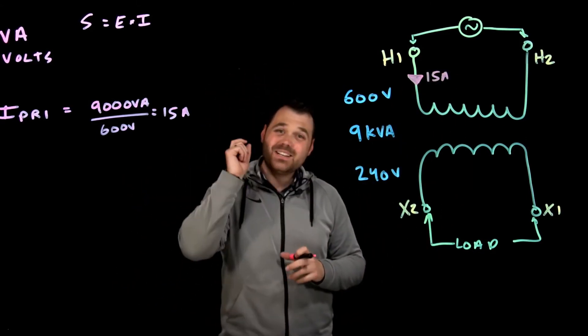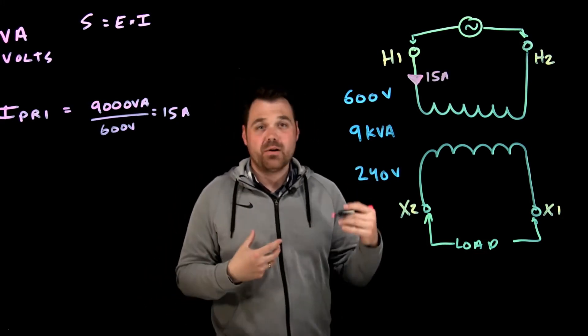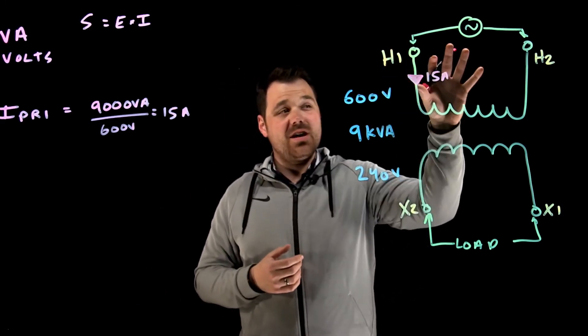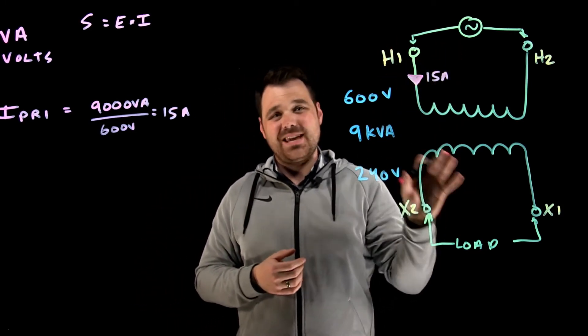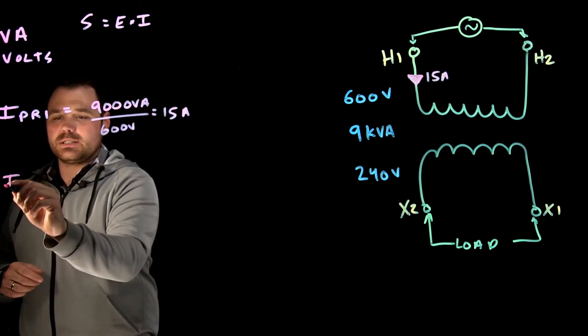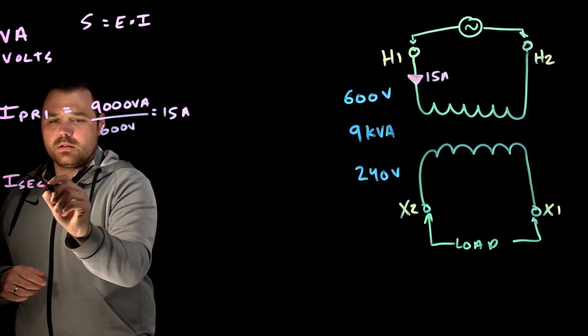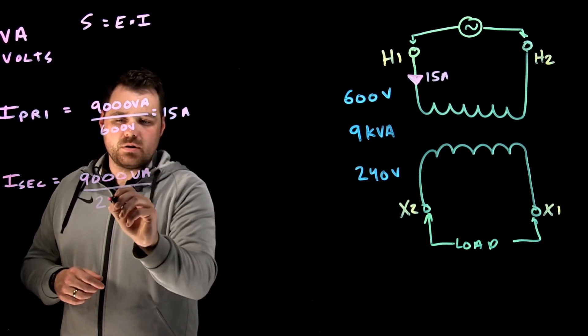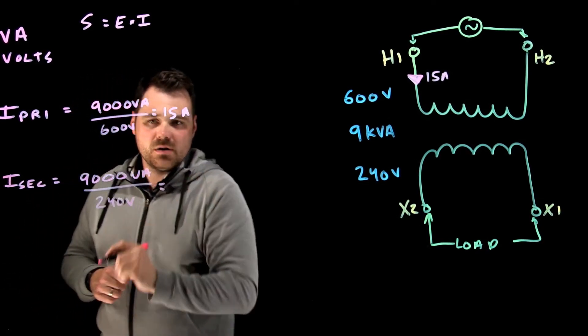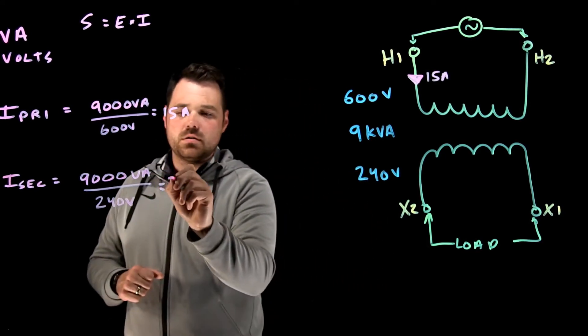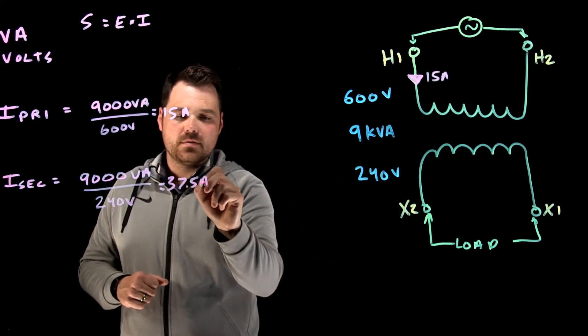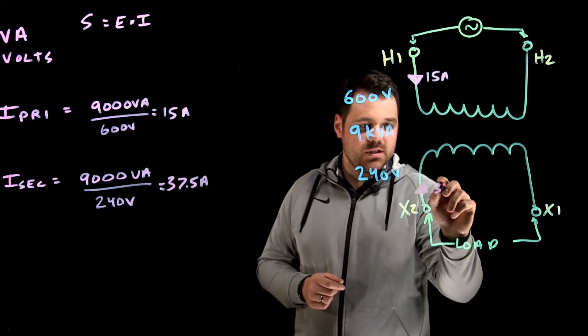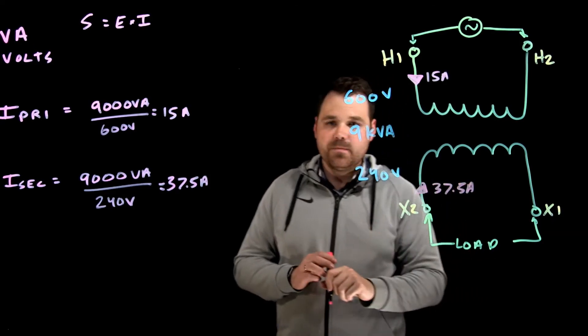I do the exact same thing with my secondary. I know that in a transformer, for basic calculations, my kVA on the primary is the same as my kVA on my secondary. I secondary equals 9,000 VA divided by 240 volts, which gives us 37.5 amps. That will be my secondary current, 37.5 amps.